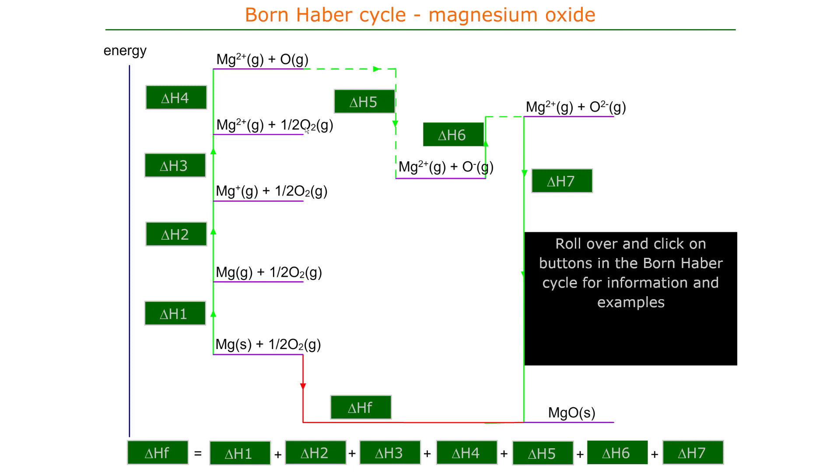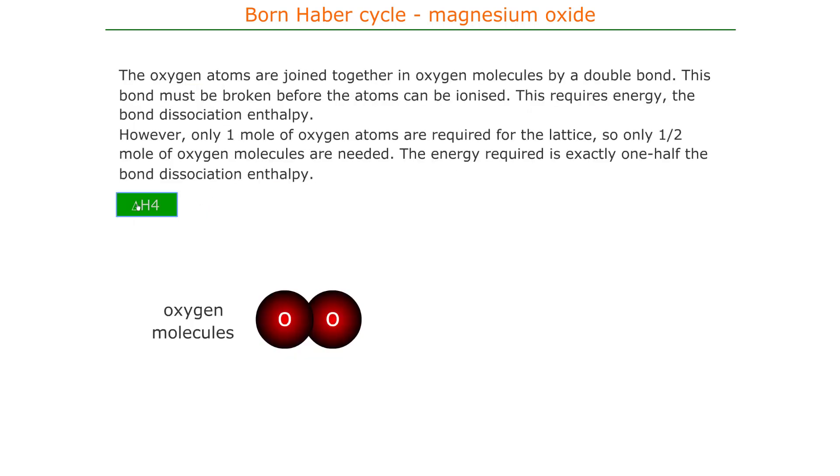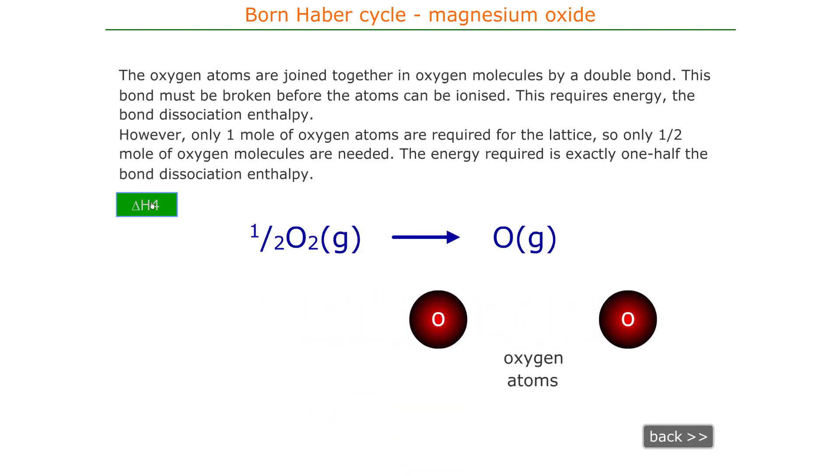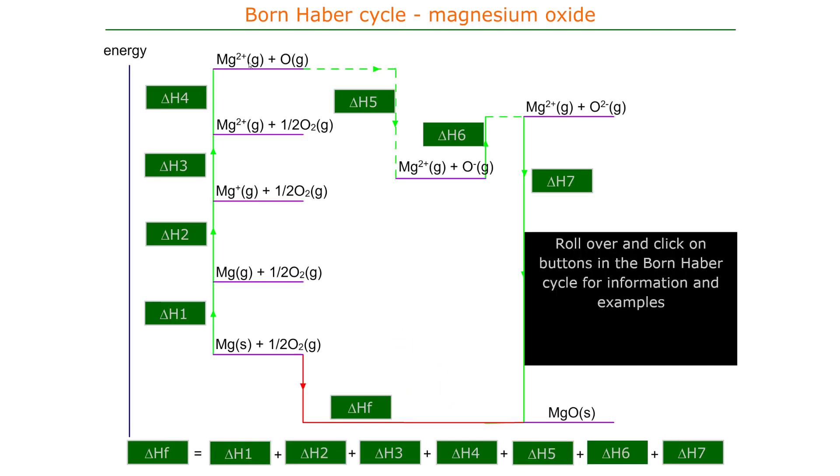To turn half O2 gas into O gas is equal to the enthalpy of atomization or one half the bond enthalpy because there's half a mole of bonds. One mole of bonds produces two moles of atoms. We only need one mole of atoms so we need half a mole of bonds, one half the bond enthalpy term. At this stage we've got oxygen in gaseous form.